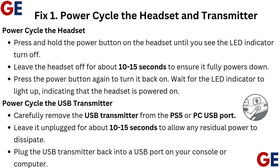Power cycle the headset. Press and hold the power button on the headset until you see the LED indicator turn off. Leave the headset off for about 10 to 15 seconds to ensure it fully powers down. Press the power button again to turn it back on, and wait for the LED indicator to light up, indicating that the headset is powered on.